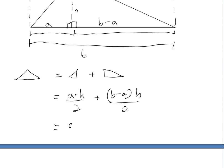We're going to get a h plus b h minus a h all divided by two. The denominator is the same.